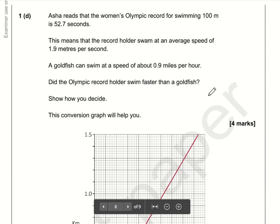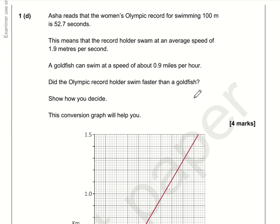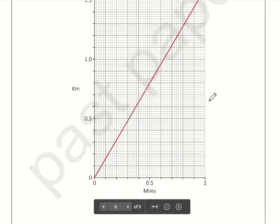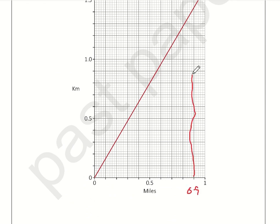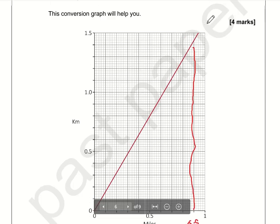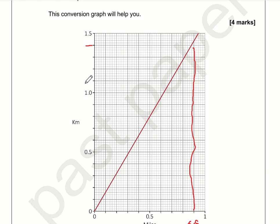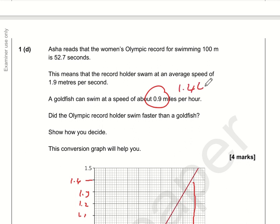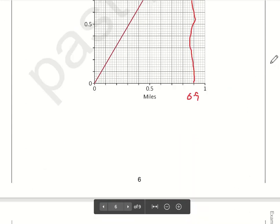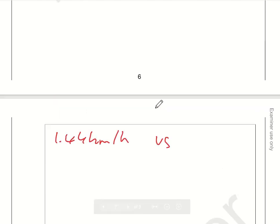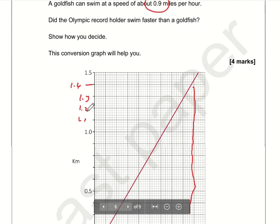We're comparing an Olympic swimmer to a goldfish. First, we need to convert 0.9 miles per hour into kilometres per hour. Looking at the graph: 0.9 here, go up along this line, we can see it's two squares above this point—1.42, 1.44—so that is 1.44 kilometres per hour, compared to 1.9 metres per second.